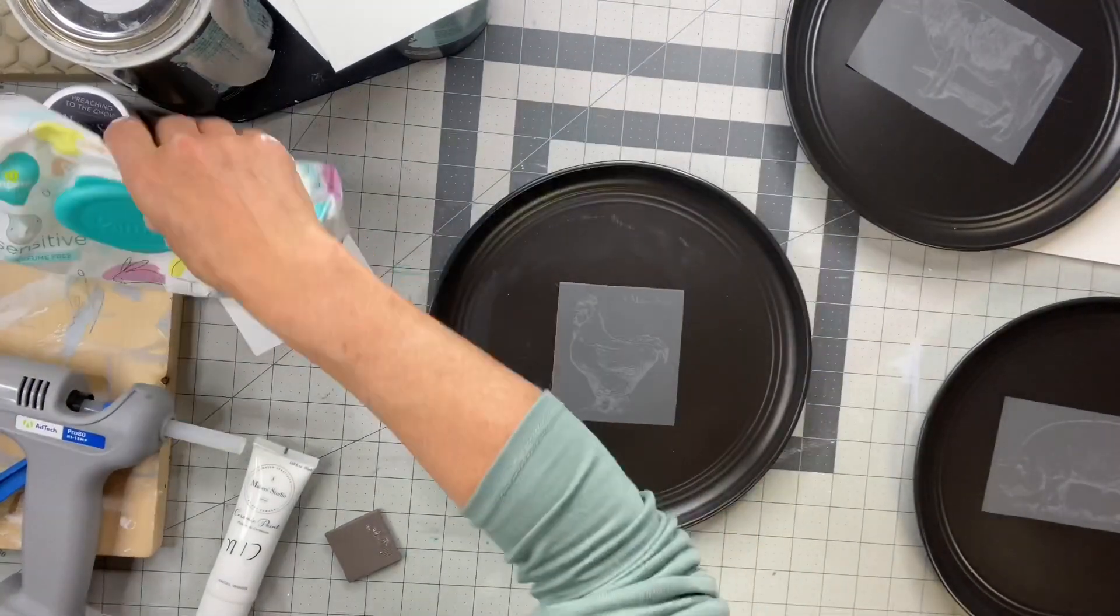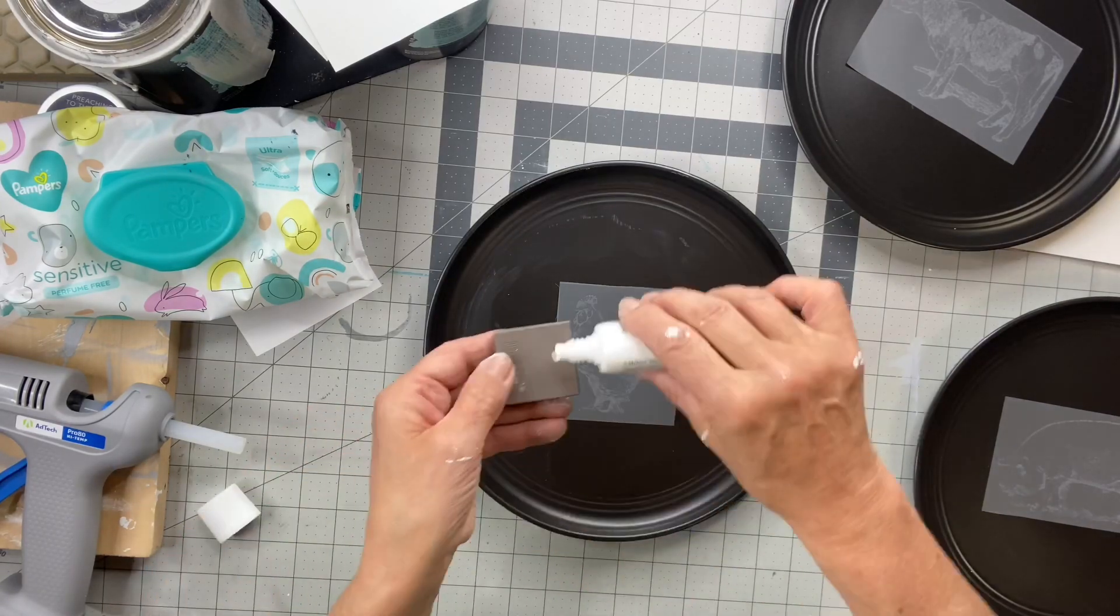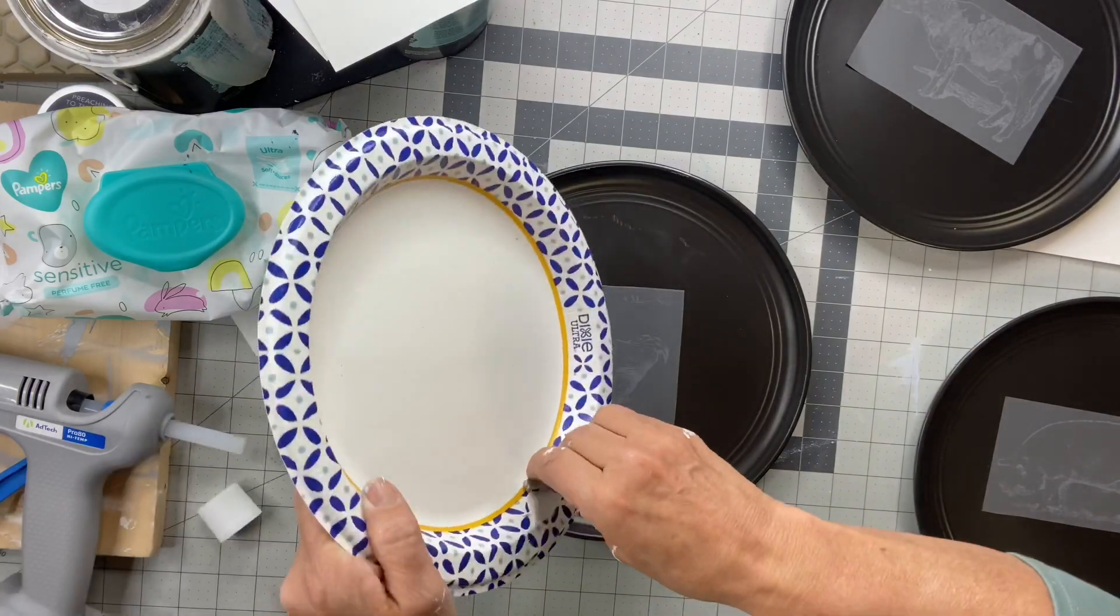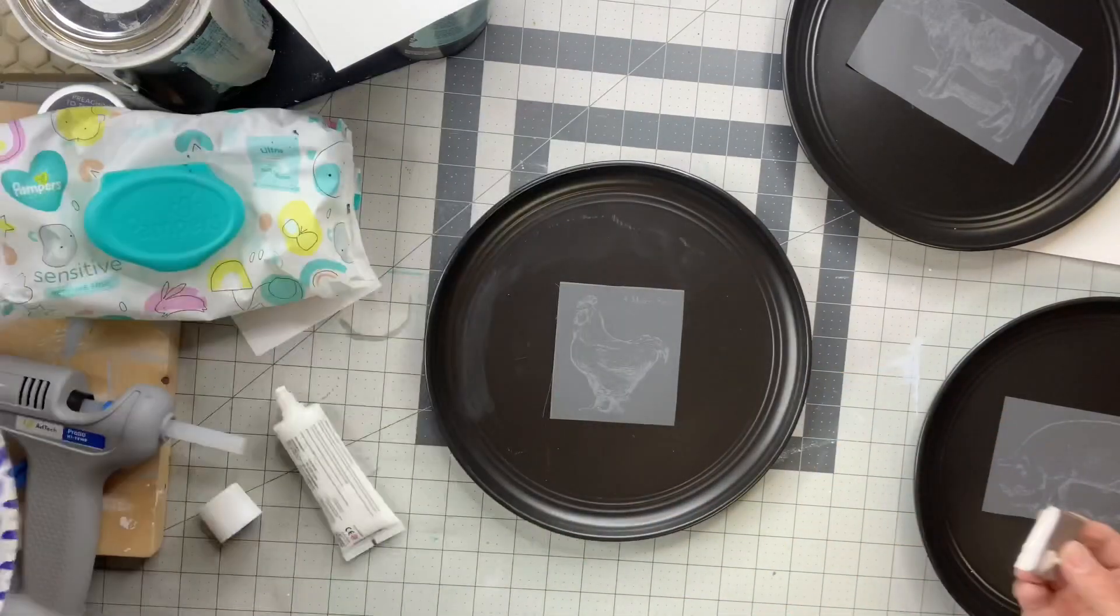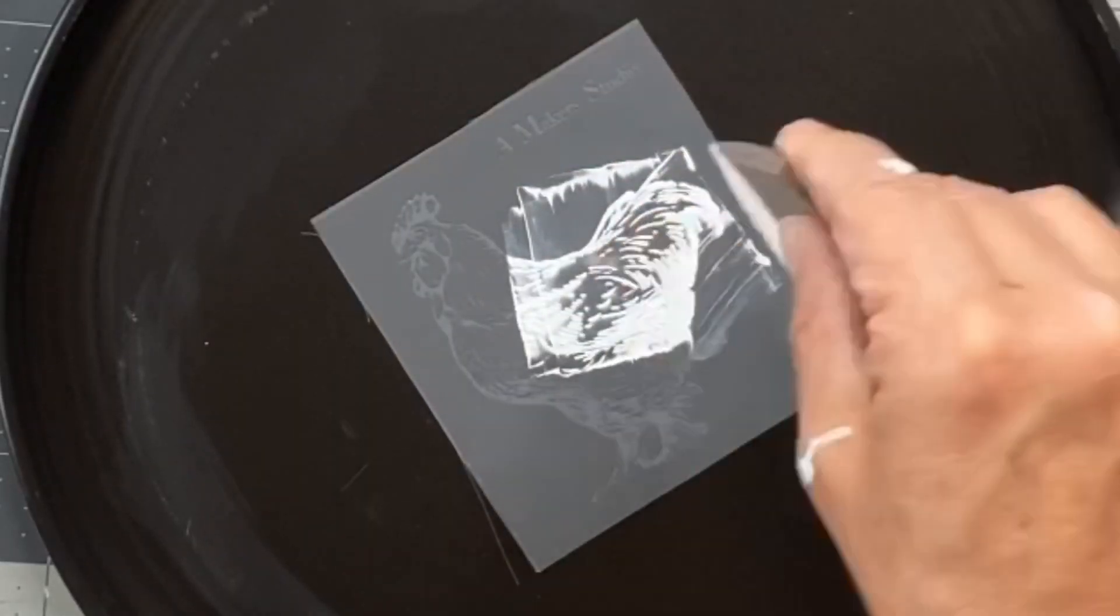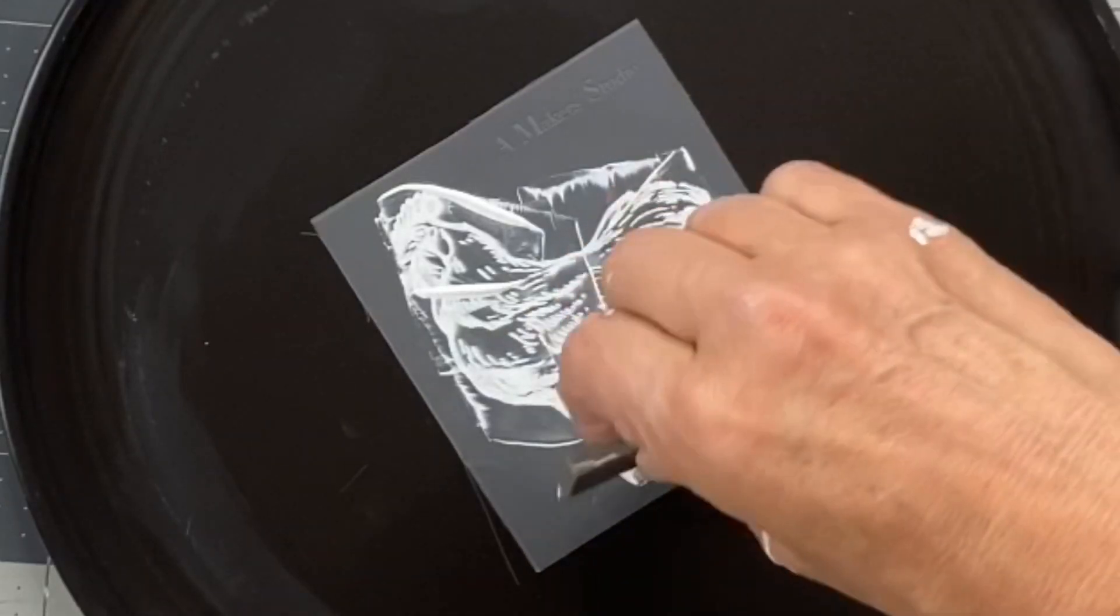Once you lift your stencil, you do want some water nearby. I always have baby wipes for my silicone spreader. You can find the silicone spreaders at chocolatefancy.com. You can find the stencil at chocolatefancy.com and also the ceramic paint.